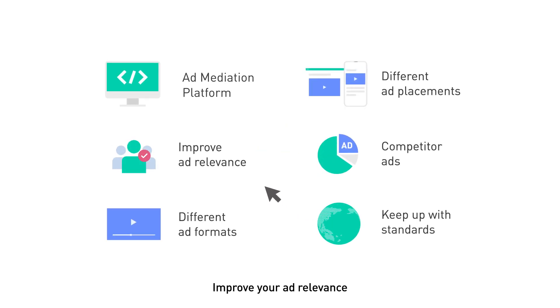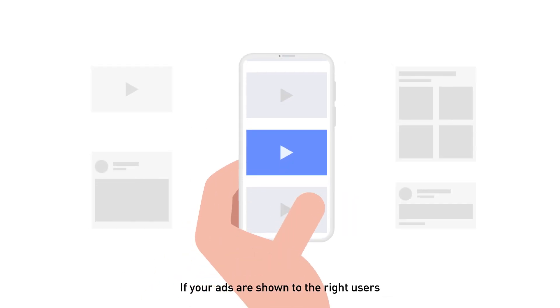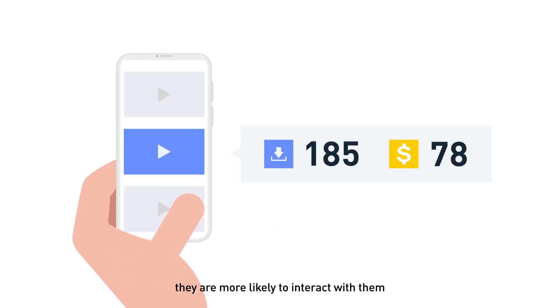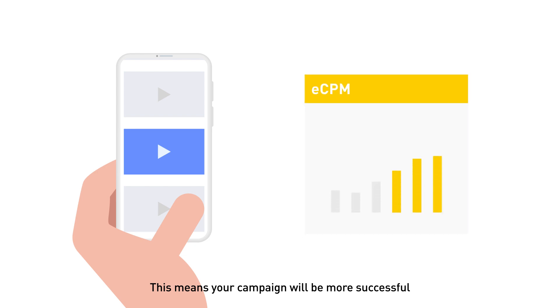Improve your ad relevance. If your ads are shown to the right users, they're more likely to interact with them. This means your campaign will be more successful and your eCPM will improve.